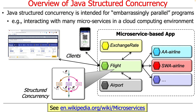Embarrassingly parallel programs are most commonly used today in modern microservice-based cloud computing environments like Spring. For example, you might have an API Gateway where clients send requests, and the gateway scatters them out to a bunch of microservices running concurrently in the backend cluster, then gathers all the results together, creates a composite result, and sends it back to the user. That's exactly what we're going to be doing in this class.